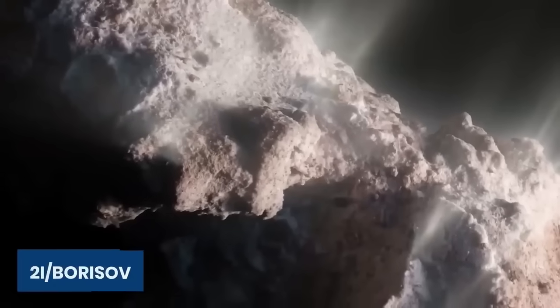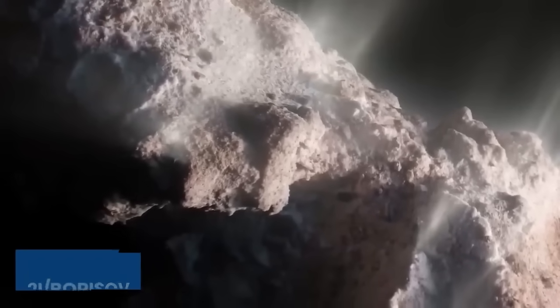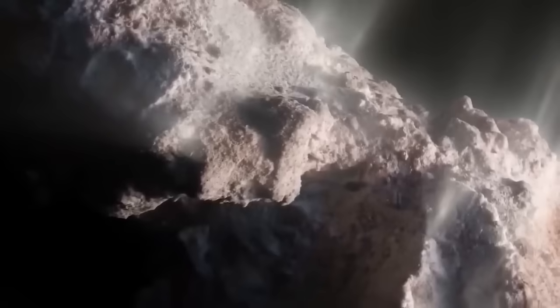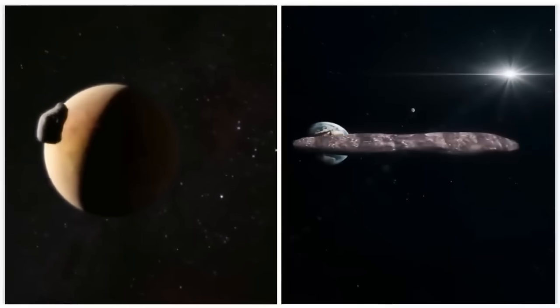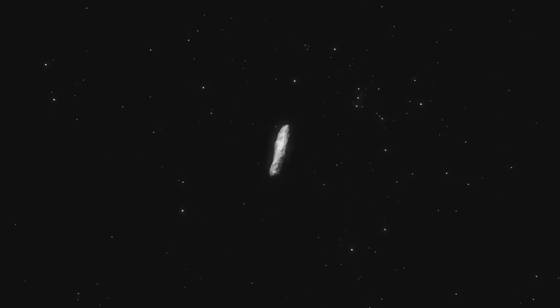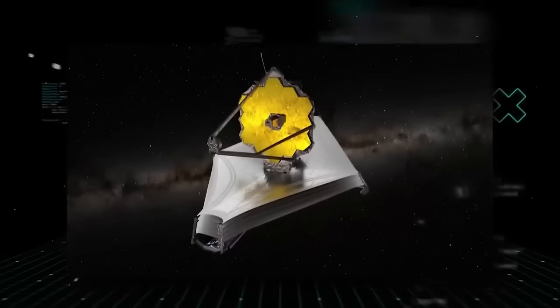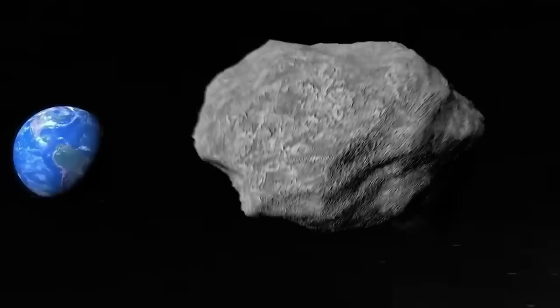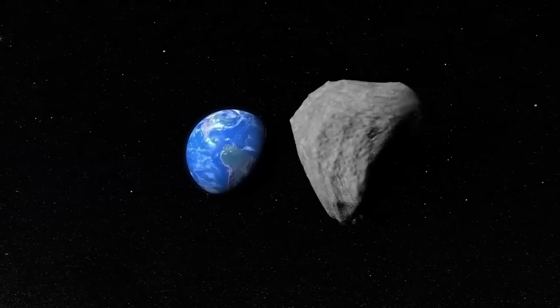Then came 2I Borisov in 2019, a more conventional looking comet but still a fascinating visitor. These two objects prove that our solar system is a cosmic crossroads. The thing nobody tells you is that the detection of these objects has only been possible in recent years, thanks to more powerful sky surveys. For billions of years, countless interstellar objects must have swept through our neighborhood unseen.